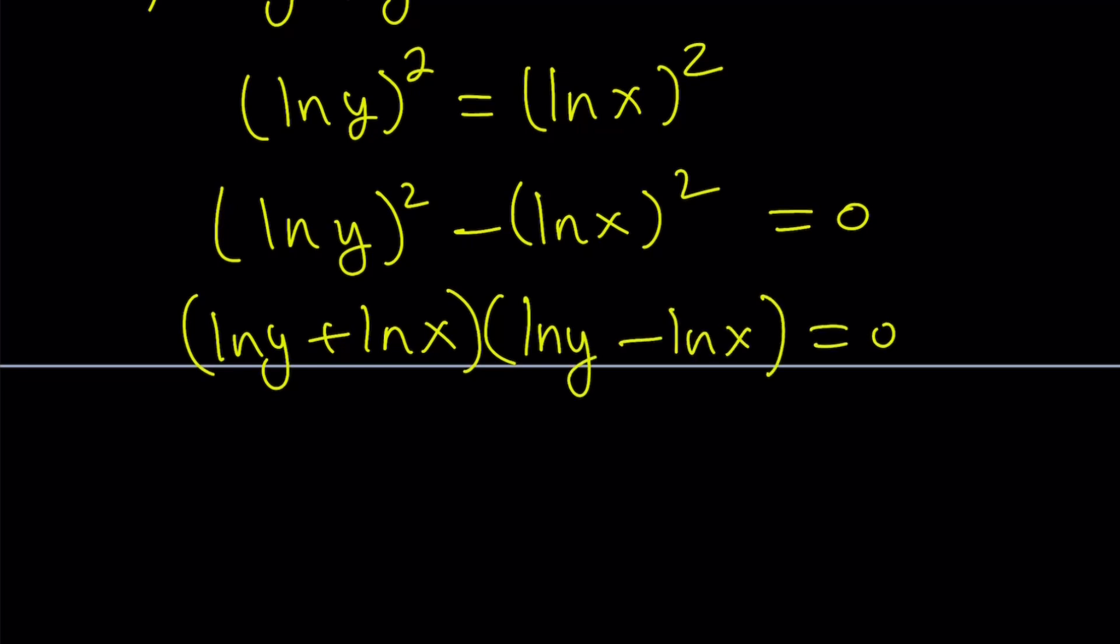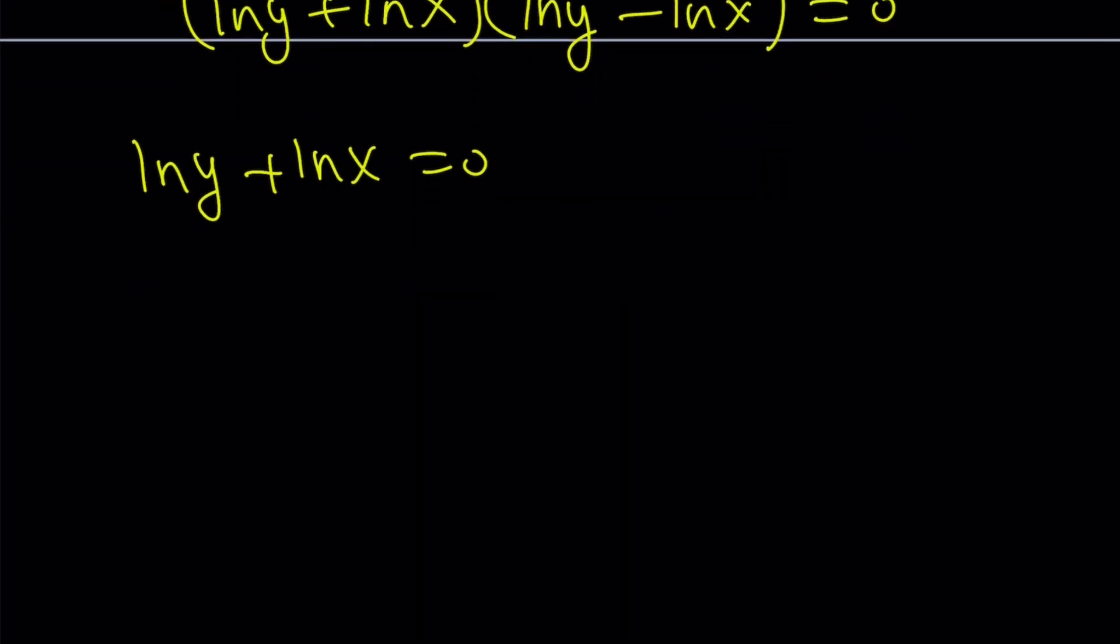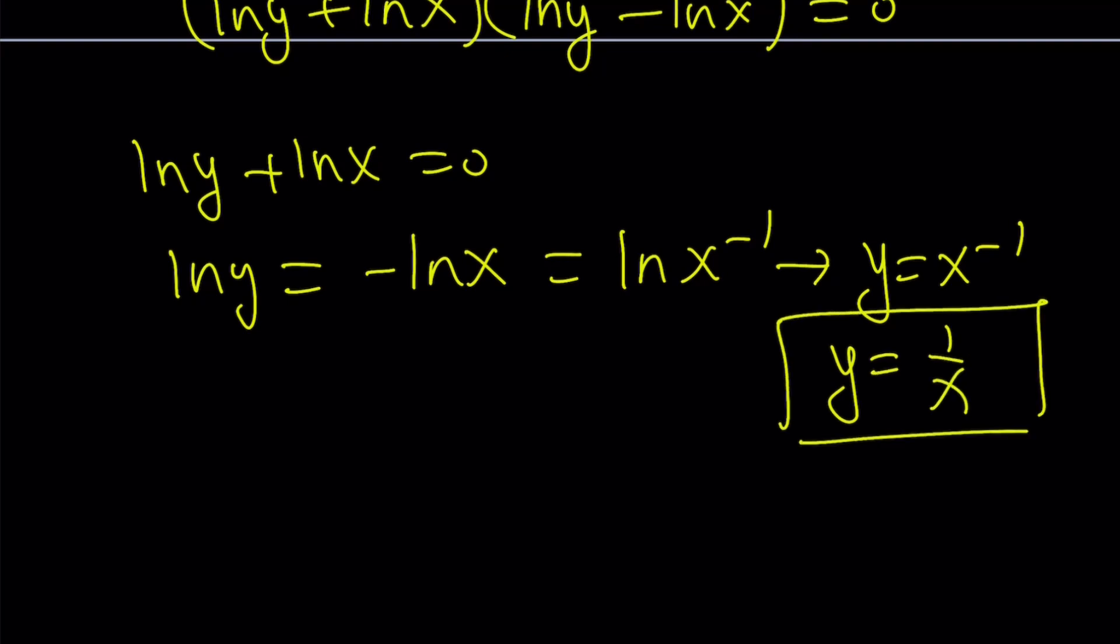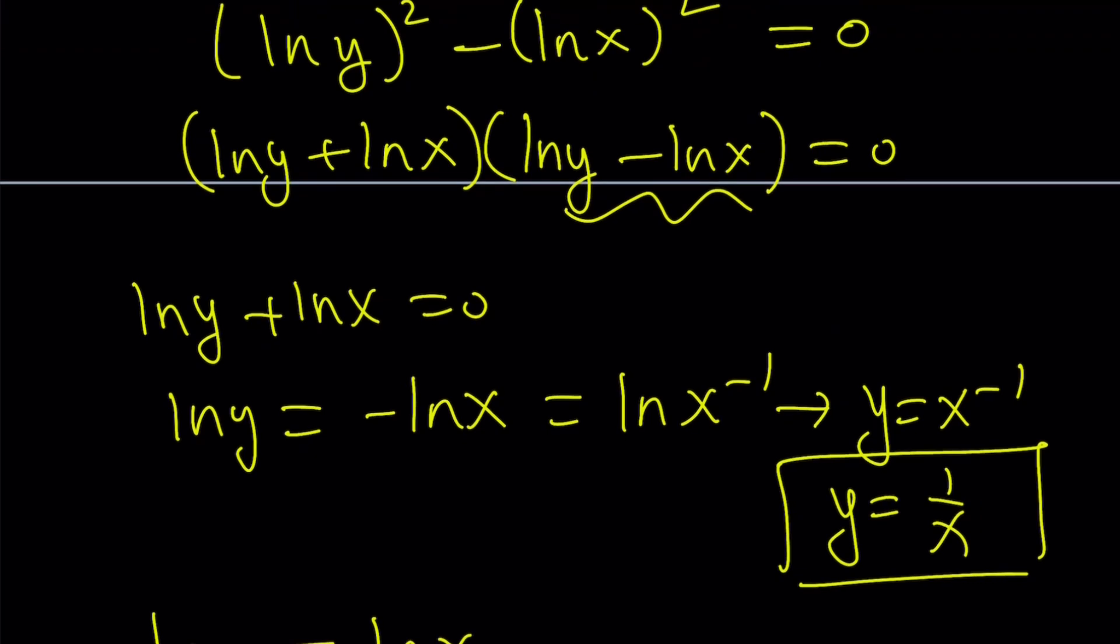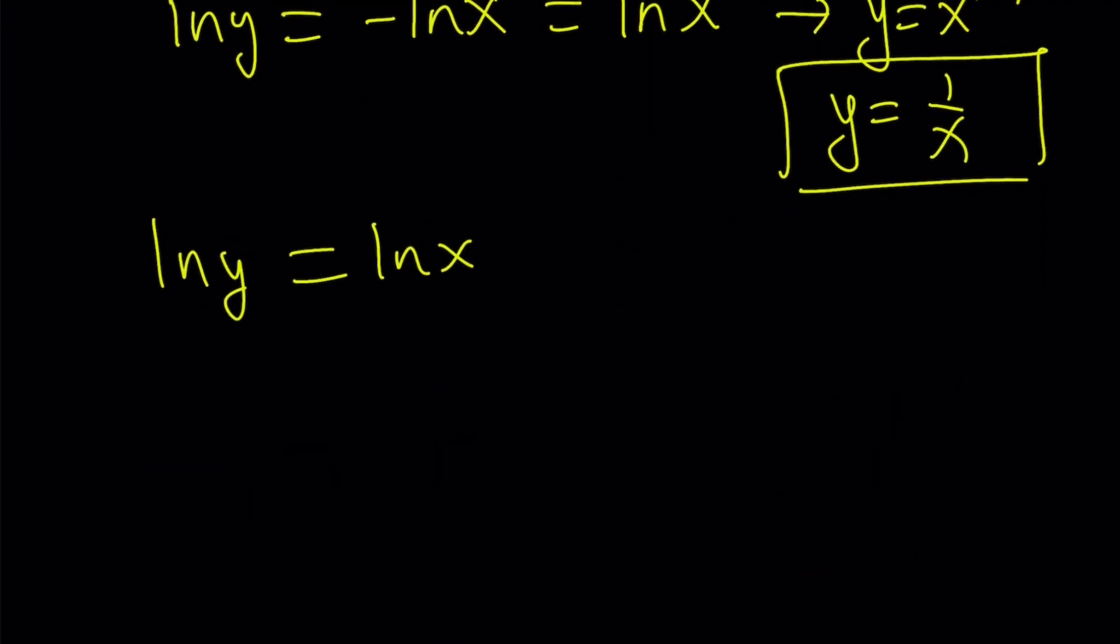From here, we get two solutions. ln(y) + ln(x) equals 0, which implies ln(y) equals -ln(x), which implies ln(x^-1), which implies y equals x^-1, which can be written as y equals 1/x. Awesome. The second one gives us ln(y) equals ln(x), and that means y equals x. And remember, we found these solutions before. So that's just another way to approach the problem. I'm pretty sure there's other ways to do it too.